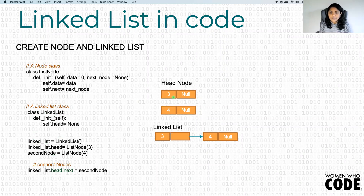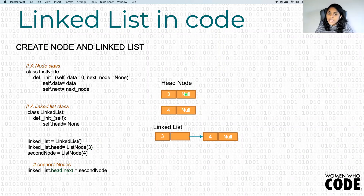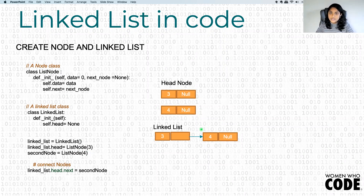A linked list is a collection of nodes. First step is to create nodes and then link them together. Here I have created a head node by calling list node and passing a value of three. This function goes to the constructor and gives me a node with a value of three. This creates a node with a value of three, but right now we have not linked that node to anything. Similarly, I create another second node with a value of four. Now I have two nodes and I have to wire them together to get the linked list.